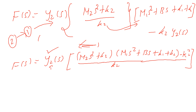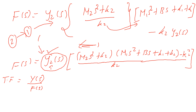The transfer function is the ratio of output to input. The input is F(s) with zero initial conditions, and the output is Y2(s) - the displacement. Therefore the transfer function Y2(s)/F(s) equals K2 divided by the expanded denominator polynomial.